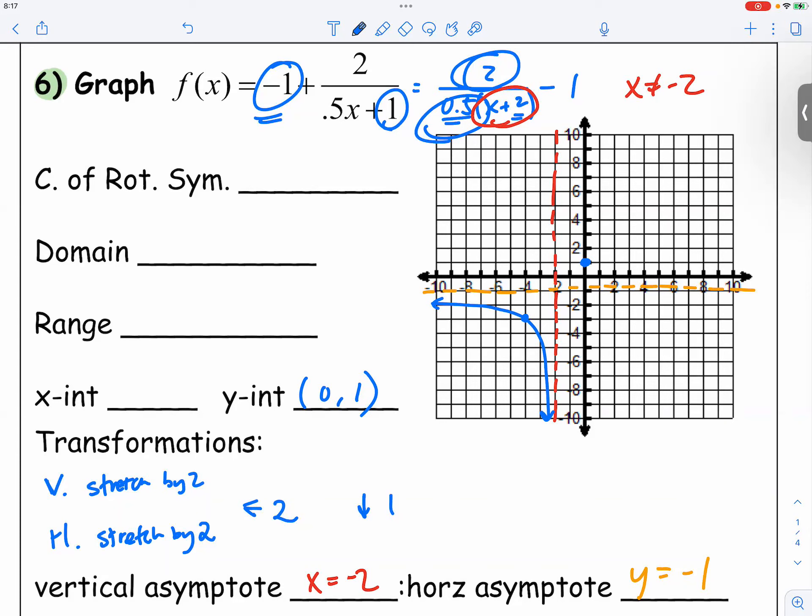And now what is the y-intercept? I mean, the x-intercept, right? The x-intercept is when y goes to 0. So 0 is equal to 2 over 0.5x plus 1 minus 1.